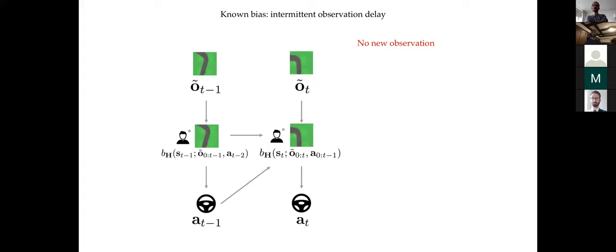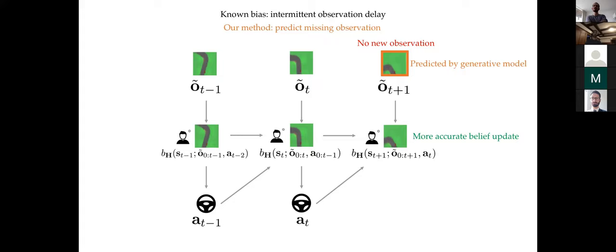Instead of copying the last observation as in the default interface, our method constructs a synthetic image observation representative of the assistant's belief state. By showing the user a prediction of what the assistant thinks the current observation could be — integrating all previous information and forward-simulating using its own dynamics model — this enables the user to better estimate their position, orientation, and speed, and in turn make these time-sensitive decisions.